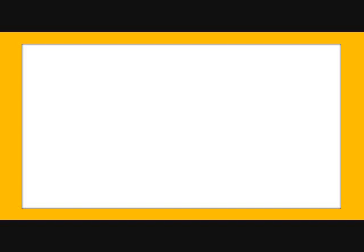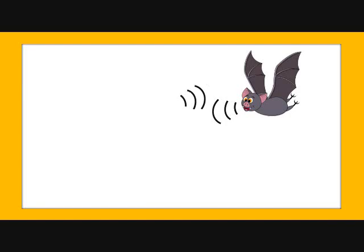However, FOXP2 isn't exclusive only to human beings. It is also contained in bats, used for echolocation; birds, used for bird songs; and other vertebrates. This means that FOXP2 cannot be the gene that makes language exclusive to human beings, since other animals also have it. If it is true that FOXP2 is involved in language, it is also true that it depends on other genes also involved in the process that have not been discovered yet.